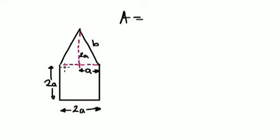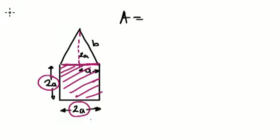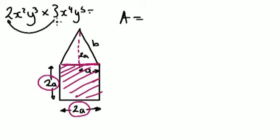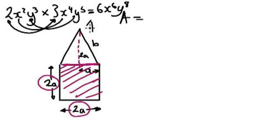To do this, work out the area of this shape. Basically, you get this times this. Remember that LIGO technique — like 2x²y³ times 3x⁴y⁵: number times number gives 6, x times x gives x⁶, y³ times y⁵ gives y⁸. Use this technique to work out 2a times 2a, which gives the area of the square here.